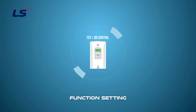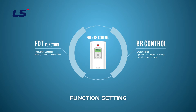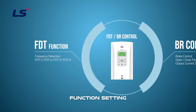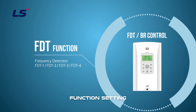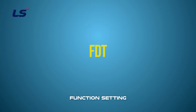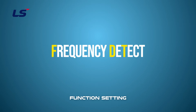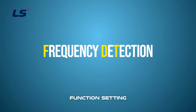Brake control can be largely divided into FDT and BR control functions. FDT is the abbreviation for frequency detection and is used to detect frequencies.